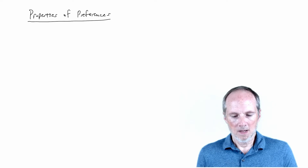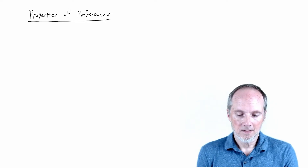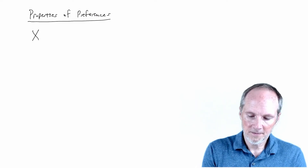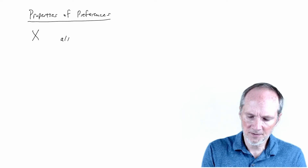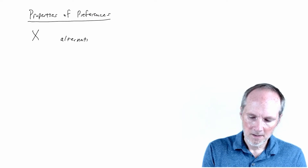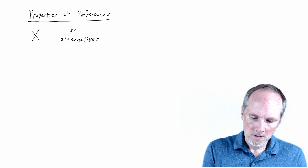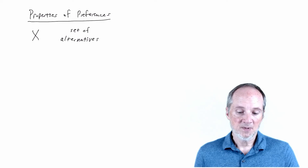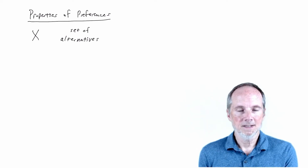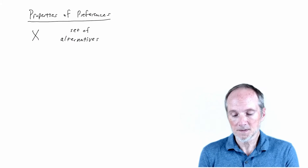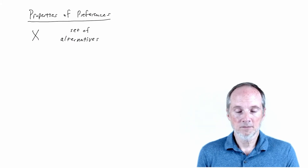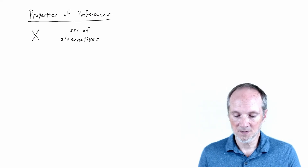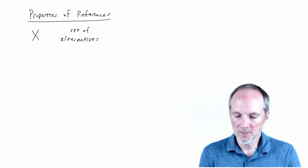I'm going to start talking about the basic Rational Choice Model, where we have a set of alternatives or possible choices. This set is very general — it's an abstract model. You can think of it as just a finite set of choices. It could be an interval on the real line, or a subset of multidimensional space. Right now, we're not committing to anything.